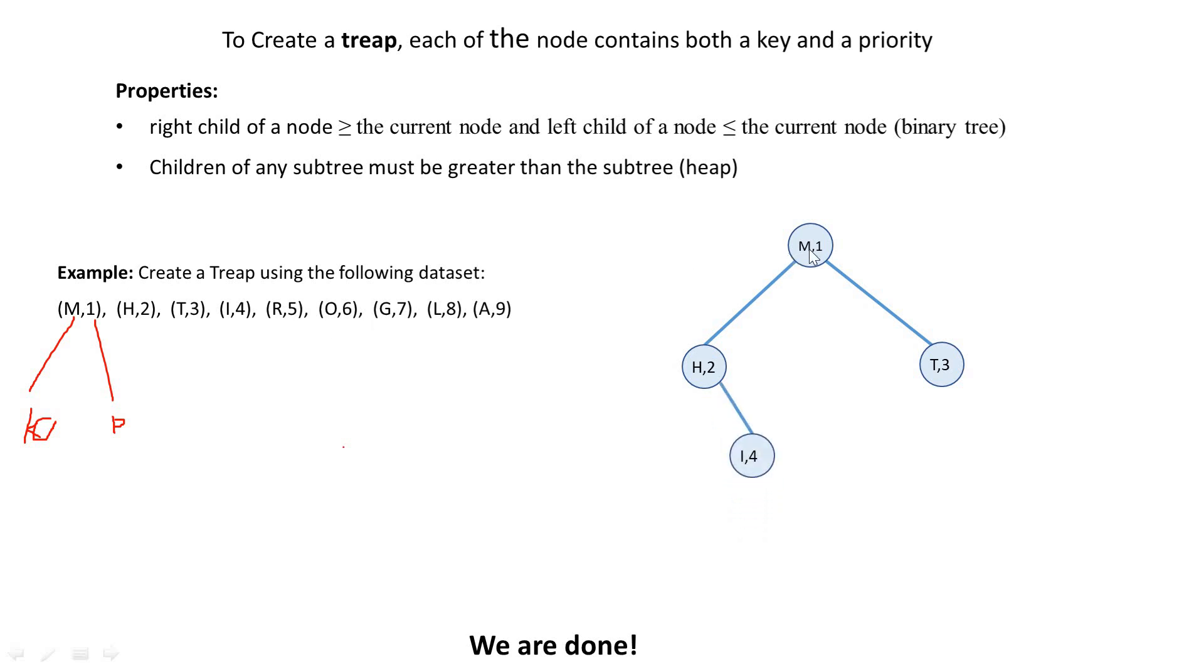R is greater than M and less than T. So it goes to the right of M and to the left of T. And we are there. O is greater than M, less than T and less than R. It comes here. G is less than M and less than H. So it comes here. And we continue in the same way all the way to A9. And we are done. This is a treap.